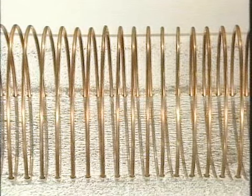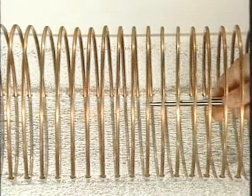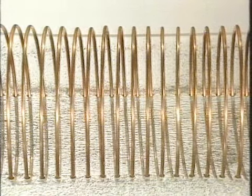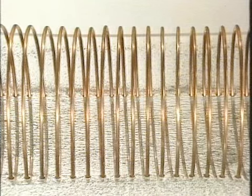Wir sehen recht deutlich, dass sich diese Eisenteilchen hier im Spuleninneren zu parallelen Ketten formieren, die parallel stehen zur Spulenachse.